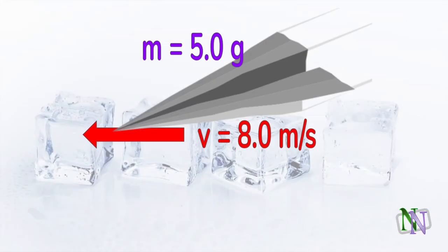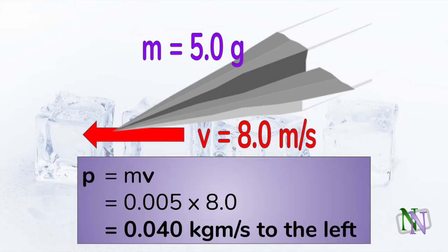As an example of momentum, this plane made from a sheet of paper is flying with a velocity of 8 meters per second to the left. We write the formula, substitute the values after converting the grams to kilograms.